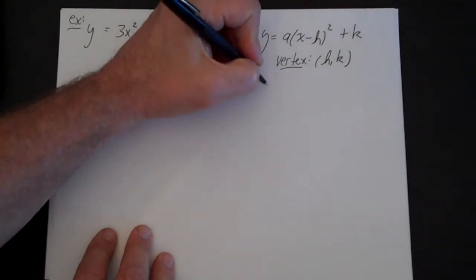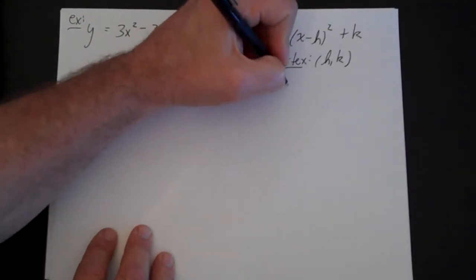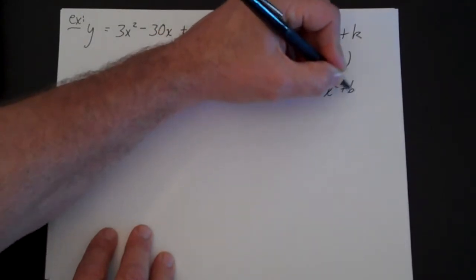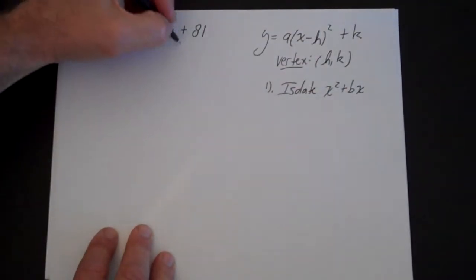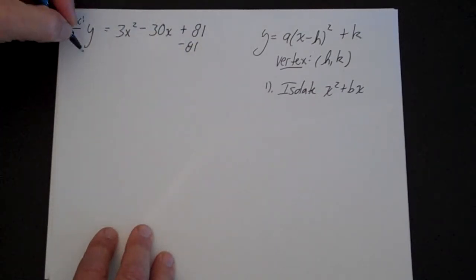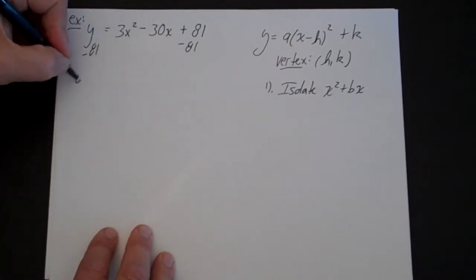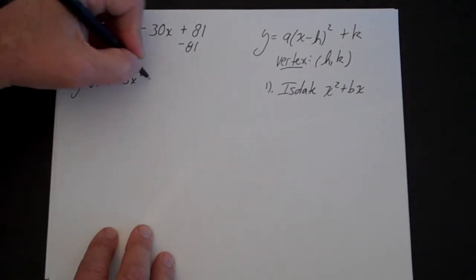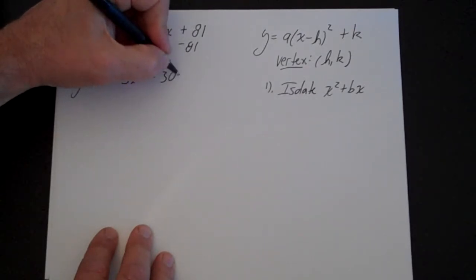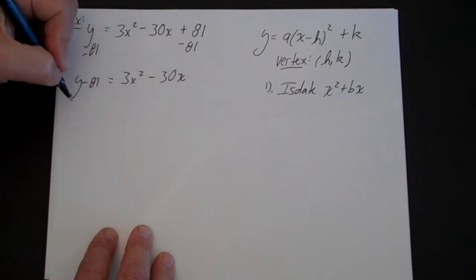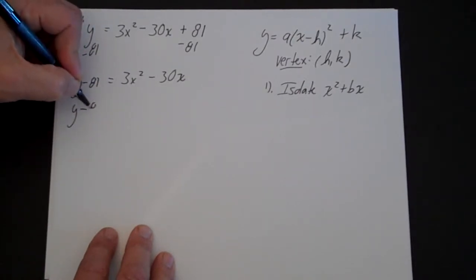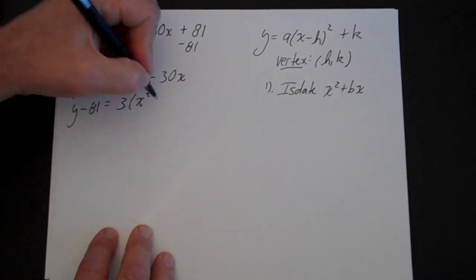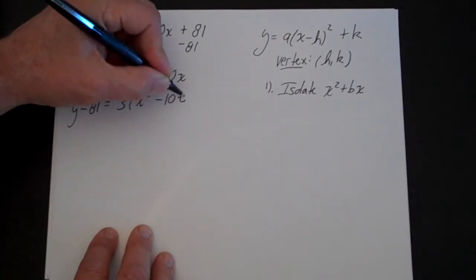So the first thing we want to do is isolate x squared plus bx. And the way that I do that is I subtract 81 from both sides. You get y minus 81 equals 3x squared minus 30x, and then I factor 3 out. Now, a couple teachers teach this different ways, that's not a problem. There's more than one way to skin this particular cat.